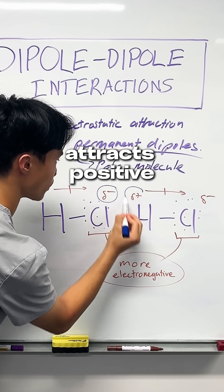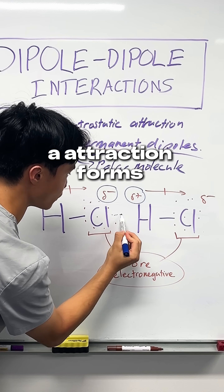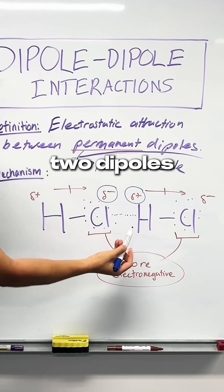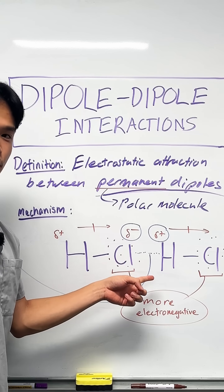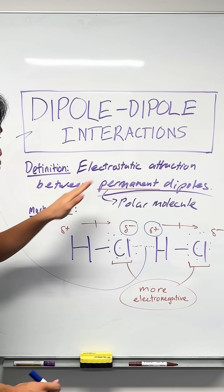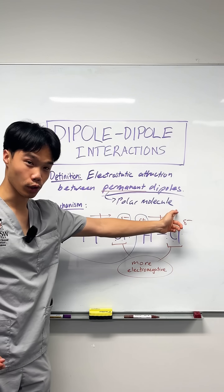Because negative attracts positive, an attraction forms between the two dipoles, and this is what we call a dipole-dipole interaction — the electrostatic attraction between permanent dipoles in polar molecules.